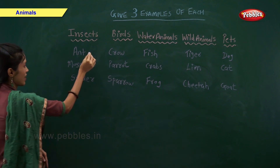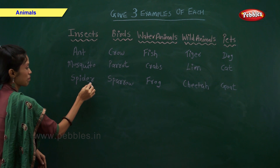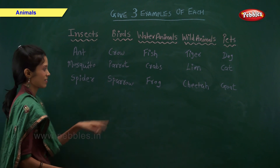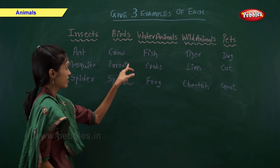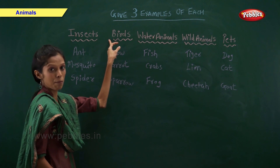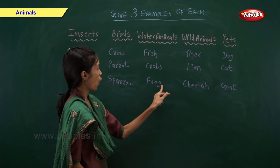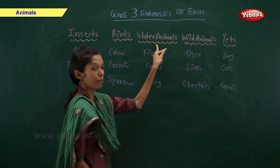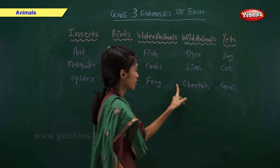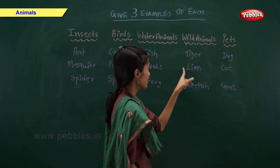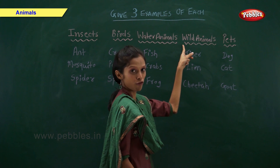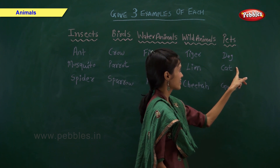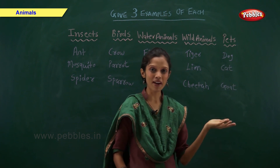So, ant, mosquito and spider are examples of insects. Sparrow, parrot and crow are examples of birds. Frog, crabs and fish are examples of water animals. Cheetah, lion and tiger are examples of wild animals. Goat, cat and dog are examples of pets.